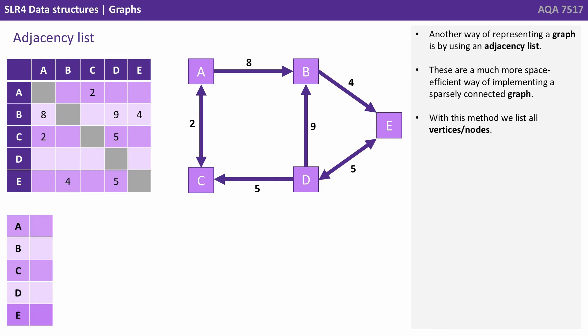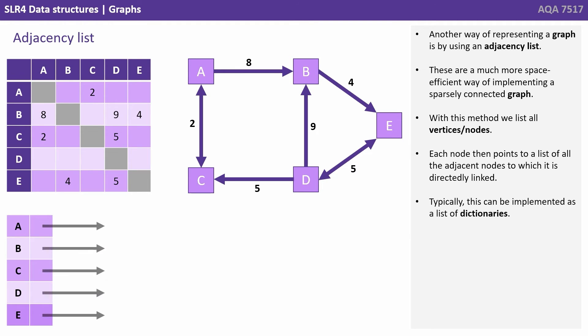Another way of representing a graph is by using an adjacency list. This is a much more space efficient way of implementing a sparsely connected graph. With this method, we list all the vertices or nodes. Each node then points to a list of all the adjacent nodes to which it is directly linked.